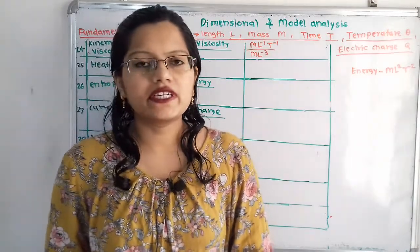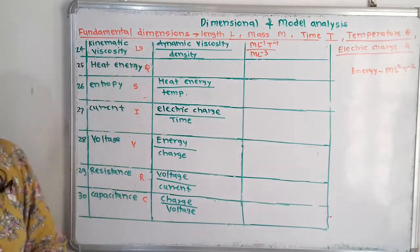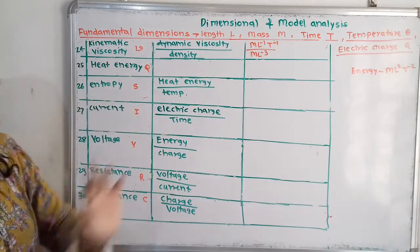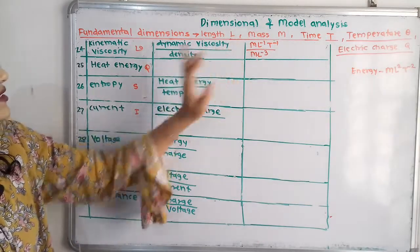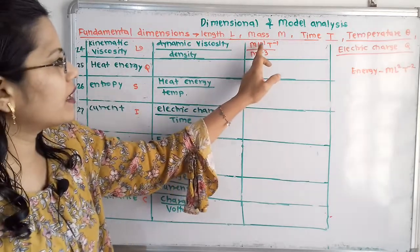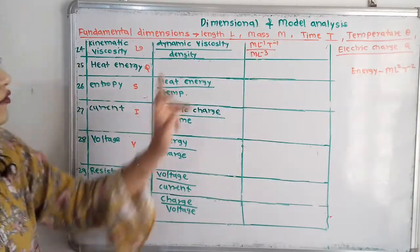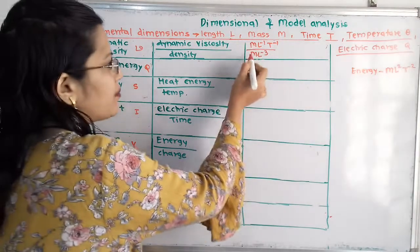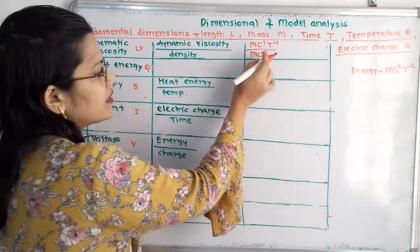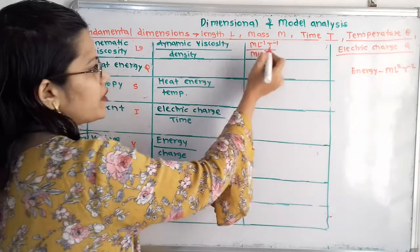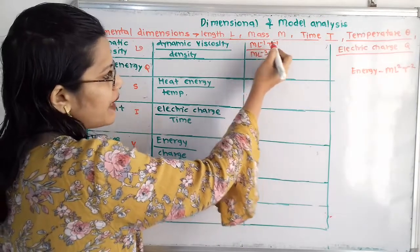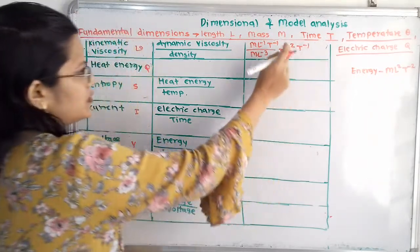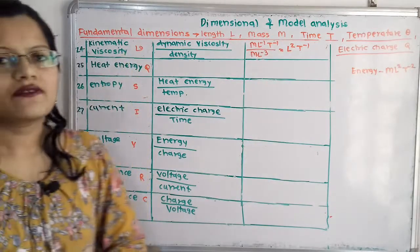Next, kinematic viscosity, notation nu, equals dynamic viscosity by density. Dynamic viscosity is ML raised to minus 1 T raised to minus 1, divided by density which is ML raised to minus 3. The M terms cancel, and L raised to minus 3 shifts to the numerator giving L raised to plus 3. So plus 3 minus 1 equals L squared, and the dimension is L squared T raised to minus 1.